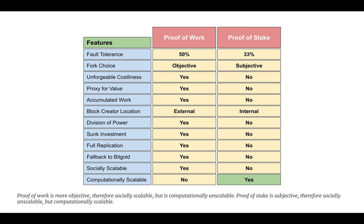Block creator location: in proof of work, mining is an external process to the network of nodes that hold the ledger with accounts, balances, and smart contracts. This separates the ledger from the block creators, giving the network of full nodes several security benefits through their independence. In proof of stake, stakers can only participate if they have deposits in the ledger, making them internal to the database — so all other nodes cannot be independent from block creators. Division of power: in proof of work, full node operators can de-link from block creators if they become corrupt. In proof of stake, that is impossible; nodes are stuck with the stakers, making the distributed ledger not censorship resistant.